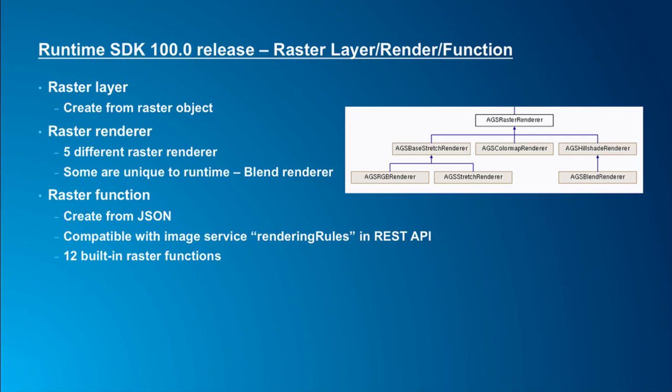One key functionality to emphasize is the raster function class. It's the same concept as raster functions in desktop apps, but in runtime the raster function is created from JSON — we have a predefined set of syntax for 12 building raster functions, all written in JSON. The raster function JSON is actually compatible with the image server REST API's rendering rule concept. So if you've used image server's REST API before, you can grab those JSONs, bring them into runtime SDK, and create raster functions from them if those functions are supported in runtime.